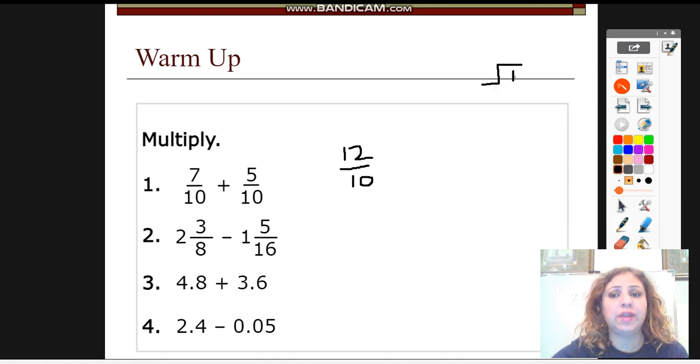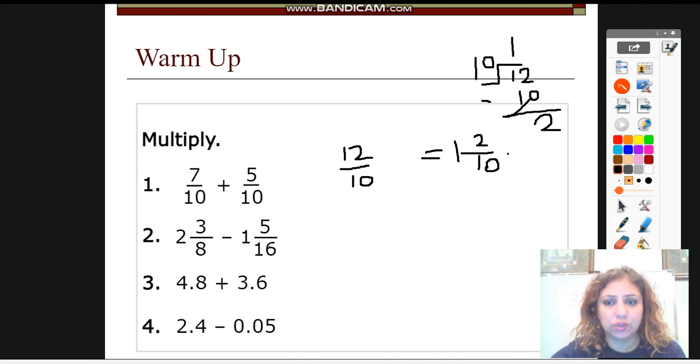As you see this is an improper fraction and I can change it to a mixed number by dividing 12 to 10 which is 1. Now let us write it as a mixed number. So it's going to be 1 and 2 over 10. I can simplify also 2 over 10 because 2 and 10 are both divisible by 2 so it's going to be 1 and 1 over 5 because 2 divided by 2 is 1 and 10 divided by 2 is 5. Let's do the next one.